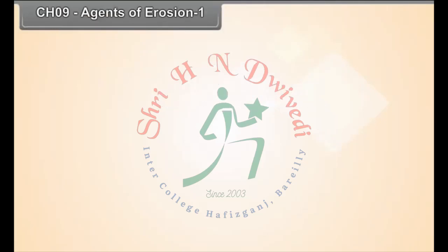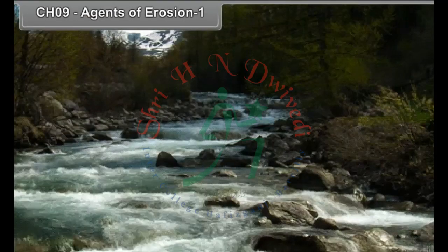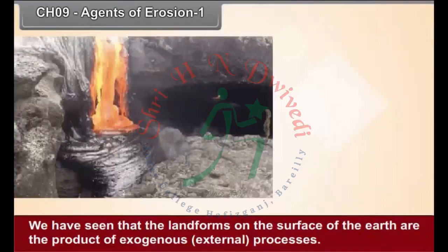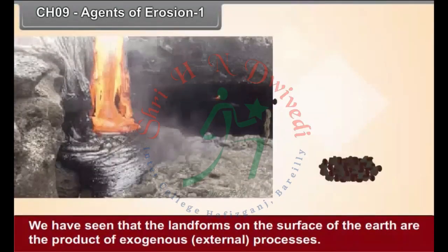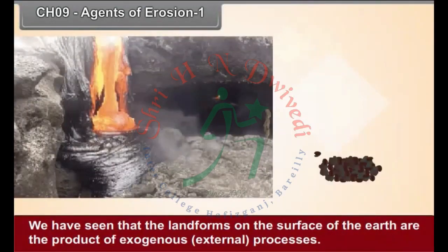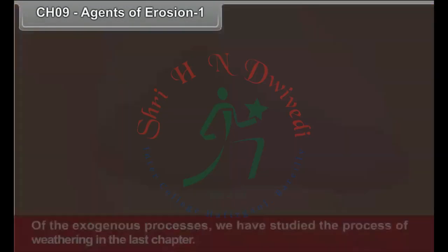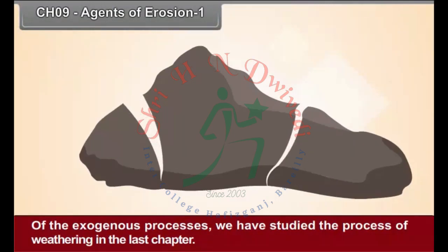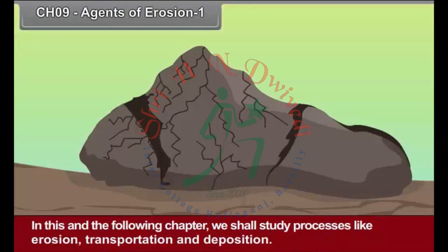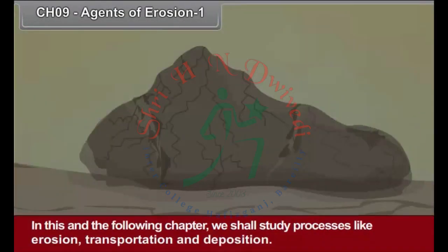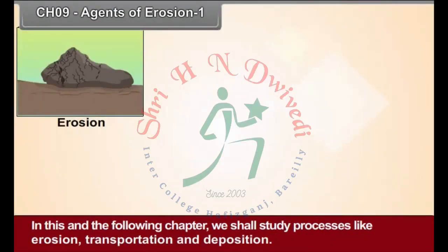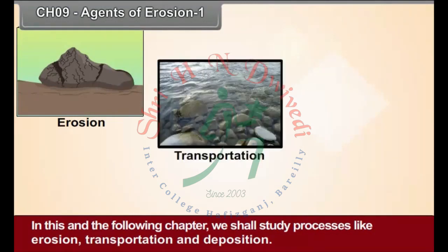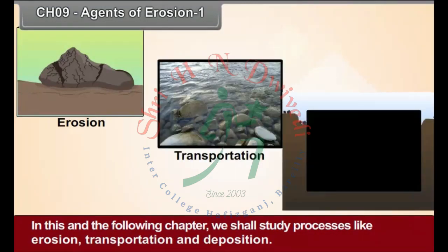Chapter 9: Agents of Erosion, Part 1. We have seen that the landforms on the surface of earth are the products of exogenous, external processes. Of the exogenous processes, we have studied the process of weathering in the last chapter. In this and the following chapter, we shall study processes like erosion, transportation and deposition.